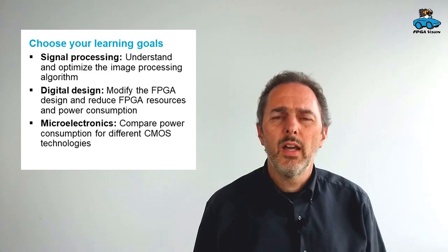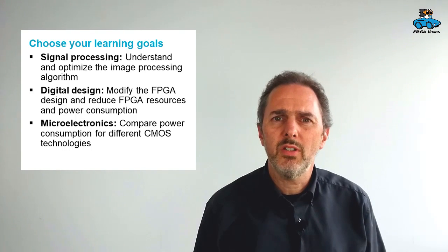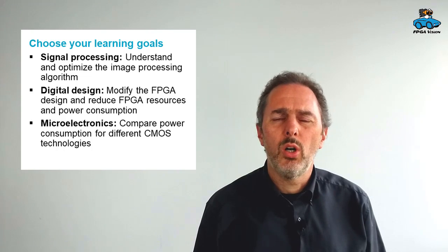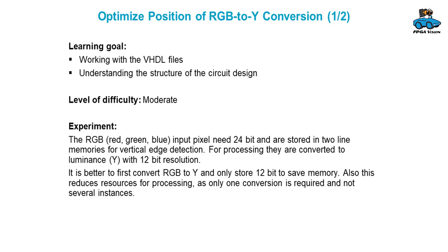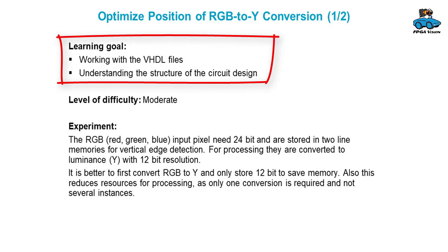Then you can use this design, modify it, and make exercises on signal processing, digital design, or microelectronics. An experiment with moderate difficulty is optimizing the position of the red-green-blue to luminance conversion. Here you work with the VHDL files and understand the circuit design.